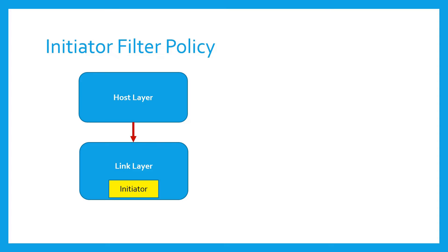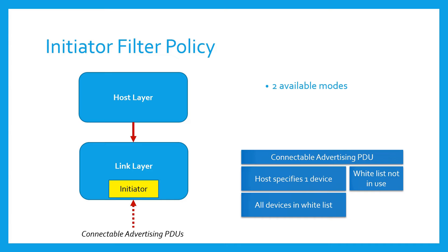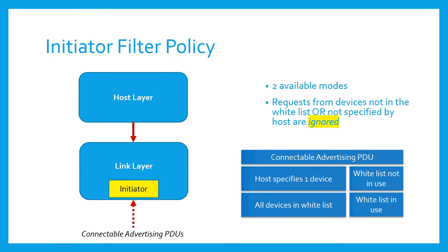In the case of a resolvable private address, the address is resolved before making a decision of accepting or discarding it. Last is the initiator filter policy. This one takes care of the processing of advertising PDUs. In the first mode, the link layer ignores the white list and processes connectable advertising PDUs from a device specified by the host. In another mode, the link layer processes connectable advertising PDUs from all devices present in the white list. If the link layer receives a connectable directed advertising PDU from an advertiser which isn't part of the white list or the device specified by the host, such a PDU is ignored.